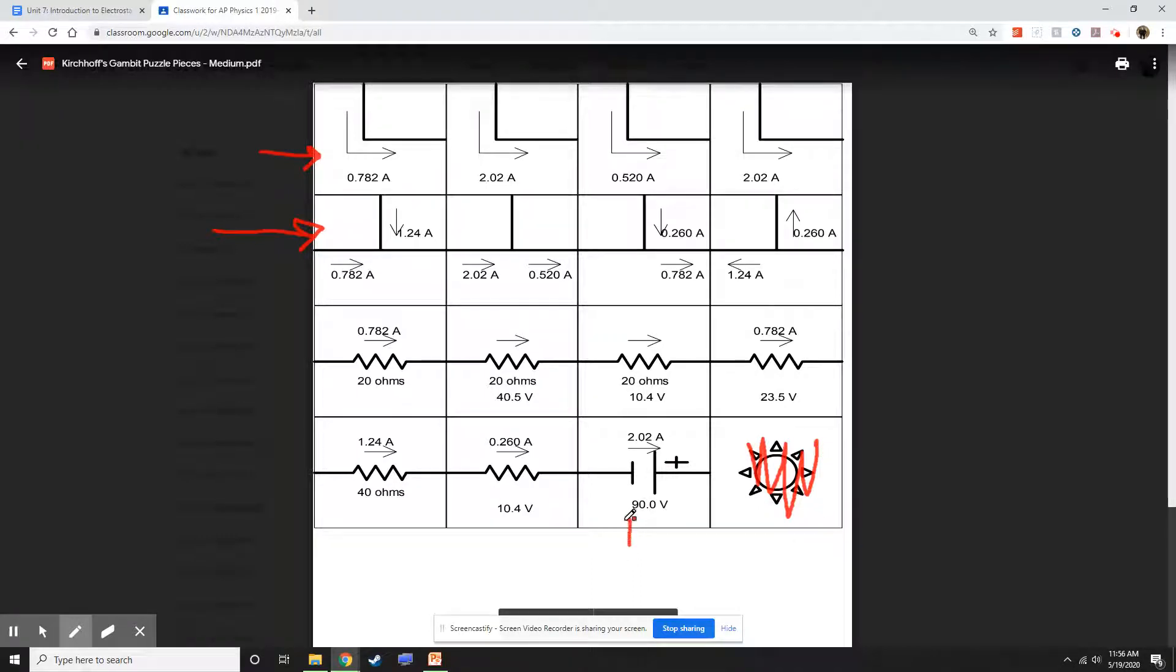So here we have the power source. And coming off the power source is going to be the resistors, the branches, whatever. So you need to arrange this puzzle. And yes, it'll fit into a nice 4x4. The problem is that it's missing some information.